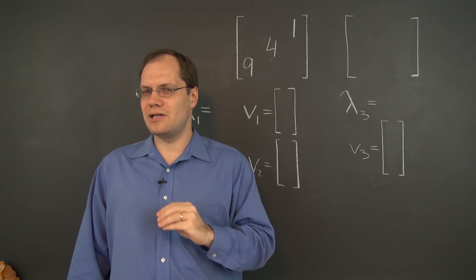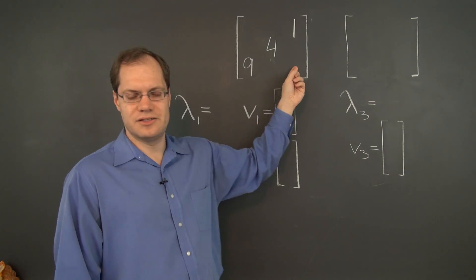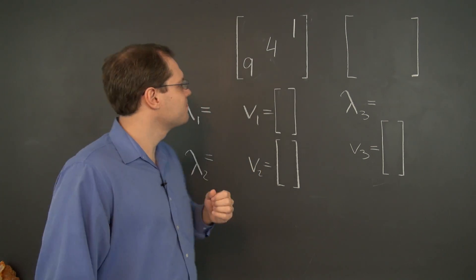It's very interesting. At first sight it may look like a diagonal matrix, but it's not because the main diagonal runs this way. So the eigenvalues of this matrix are not one, four, and nine.